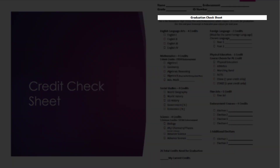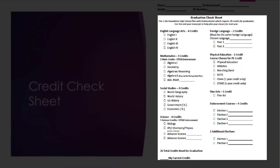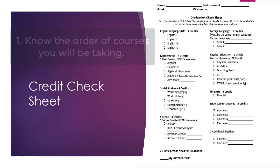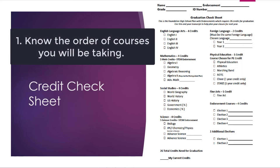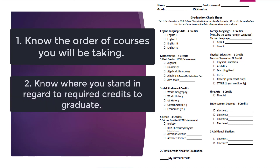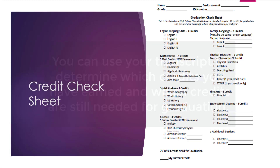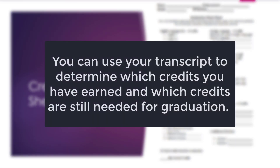Credits simply lists the number of credits you have currently earned. The graduation check sheet serves two purposes: first, it helps you know the order of courses you will be taking, and second, it helps you know where you stand in regard to required credits. You can use your transcript to determine which credits you have earned and which are still needed for graduation.